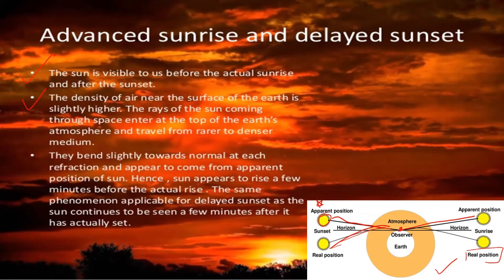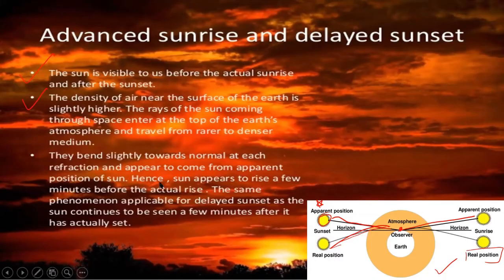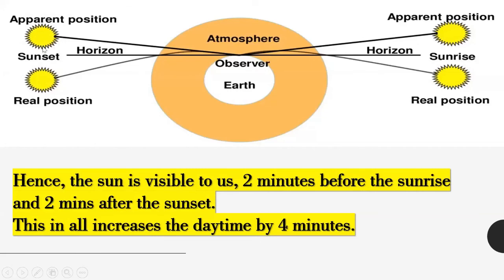The rays of the Sun coming through space enter at the top of the earth's atmosphere and travel from rarer to denser medium, bending slightly towards the normal at each refraction, and appear to come from the apparent position of the Sun. Hence the Sun appears to rise a few minutes before the actual sunrise. The same phenomenon applies to delayed sunset — the Sun continues to be seen a few minutes after it has actually set. The apparent position makes the Sun visible two minutes before sunrise and two minutes after sunset.